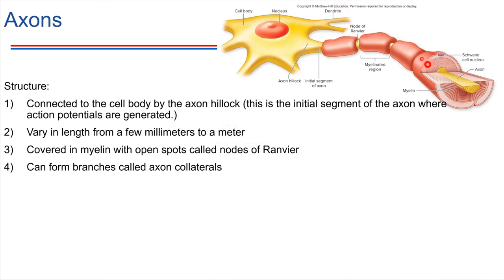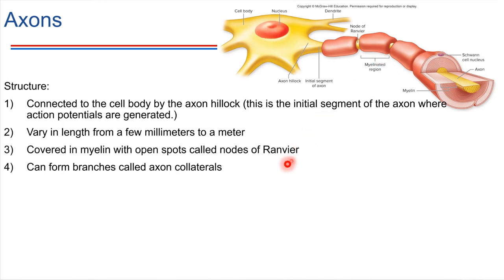That axon is wrapped in some insulation called a myelin sheath. You'll notice there are some gaps in the myelin sheath — we'll be revisiting these gaps a little bit later on, as they are very important for signal propagation. The proper name for those gaps is nodes of Ranvier, and we'll come back to this later on in the chapter.